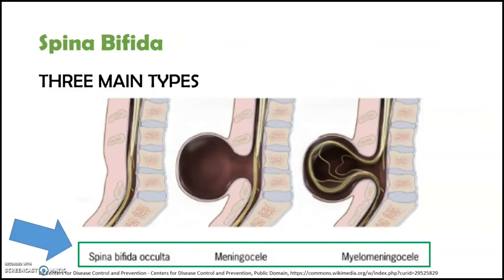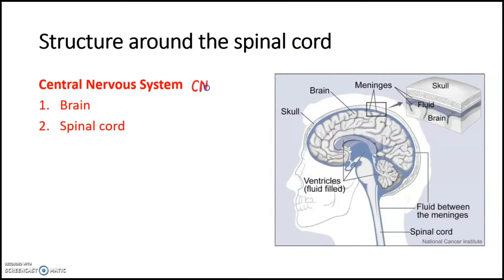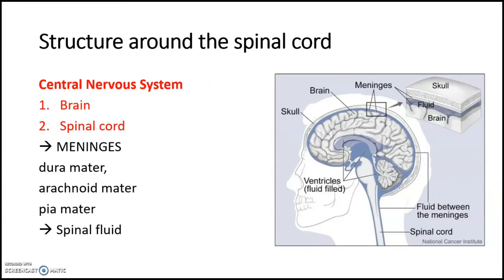Before we go further, let's review the structure around the spinal cord. The central nervous system includes the brain and the spinal cord. They are protected by three layers of membranes called the meninges. The layers are the dura mater, the arachnoid mater, and the pia mater. The cerebrospinal fluid is located in the subarachnoid space between the arachnoid mater and the pia mater. The spinal cord is further protected by the spinal column, which is made up of vertebrae.